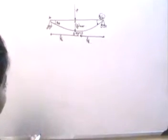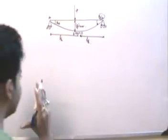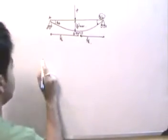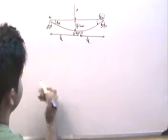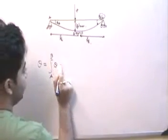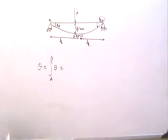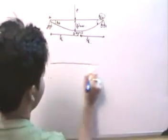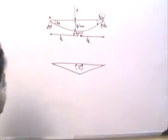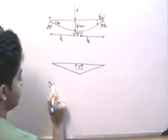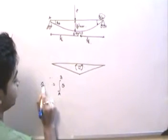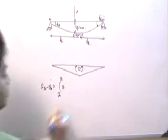Now, from the first moment area theorem, we can find between two points A and B the difference of slope. The bending moment diagram will essentially be triangular in shape. From theta A to B, what we have is theta_b minus theta_a, which equals the area of the bending moment diagram between A and B divided by EI.